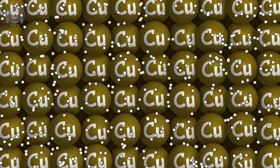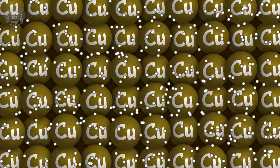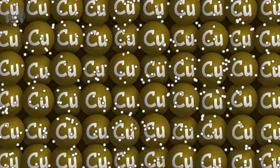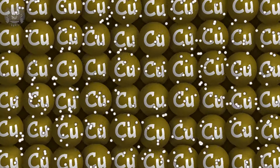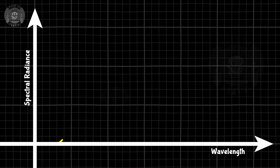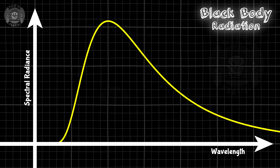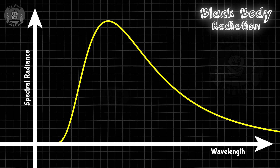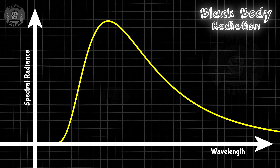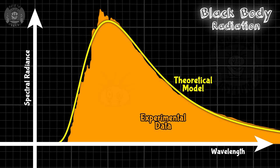When they bump into each other, different particles will lose different amounts of energy and therefore release different light. Statistically, the distribution looks something like this. We call it a blackbody curve. This is what the curve looks like for the Sun, and it matches up pretty well with experimental data.